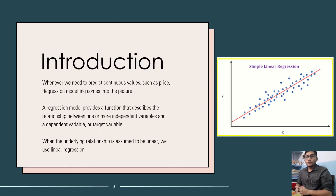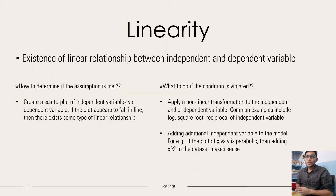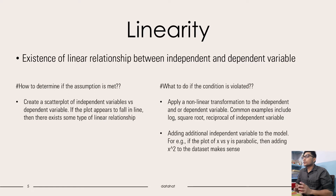How do we determine if the relationship between the independent and dependent variables is linear? One of the primary things you can do is intuitively draw a scatter plot between the independent variables and the dependent variables. If you see that the points fall fairly enough on a straight line or diagonal, then you can conclude that your linearity assumption is met. If that condition is violated, we apply a non-linear transformation to the independent or dependent variable, such as taking the log or the square root.